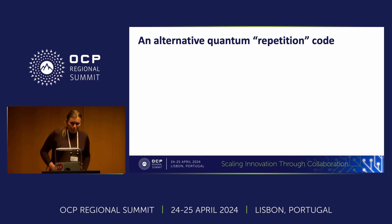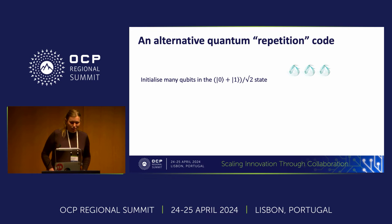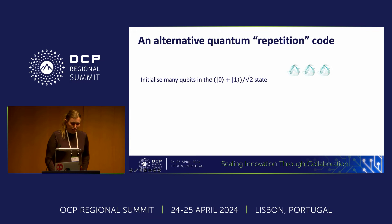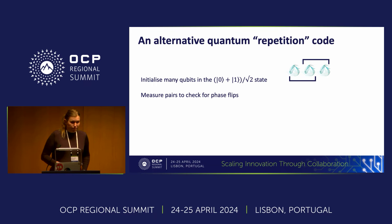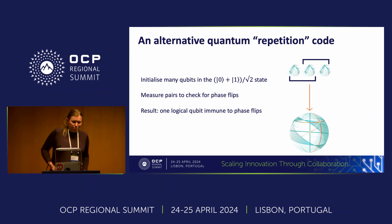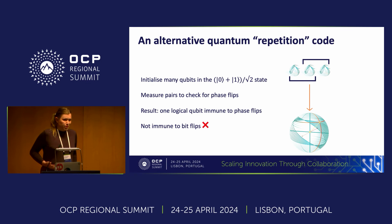Thankfully, we can also correct for phase flips using a similar idea. Rather than initializing our qubits in the zero state, we initialize them in a uniform superposition of zero and one. Then, rather than measuring to check for bit flips between pairs of qubits, we check for phase flips between them. This gives us a logical qubit which is immune to phase flips, but no longer immune to bit flips.